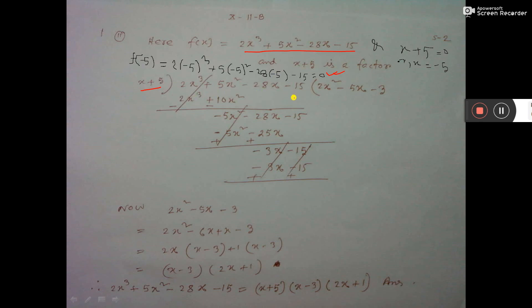This division you have learnt in class 7. So you divide. How to divide? You have to make equal to this first term. Then if you put 2x square here, then it will be equal. So 2x square you multiply with this. It is 2x cube plus 10x square.